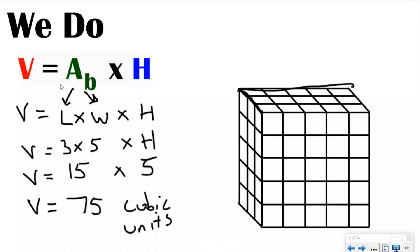I could have just counted the area of the base one by one all the way to 15. But instead, all I did was break apart the area of the base into length times width — three times five — and still got 15. Sometimes you can just count the area of the base directly. If it's a bit bigger and you don't want to count one by one, you can use the length and width to help you find the area of the base.